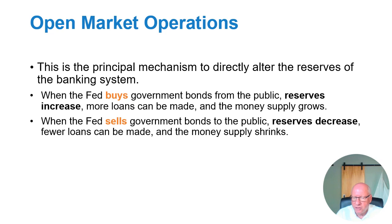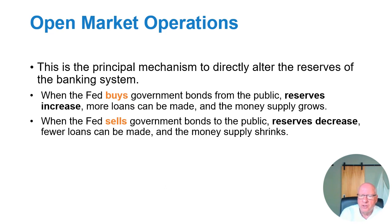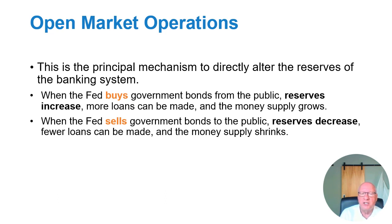Vice versa: if the Federal Reserve sells a government bond to the public, an investor — say, buying a million dollars' worth — writes a check to the Federal Reserve. The Federal Reserve cashes the check and pulls the money out of the bank, so total reserves in the banking system decrease. If reserves decrease, banks cannot make as many loans, total lending goes down, and the money supply shrinks. So to increase the money supply the Fed buys bonds; to decrease it the Fed sells bonds.